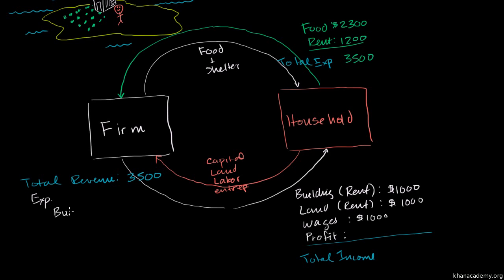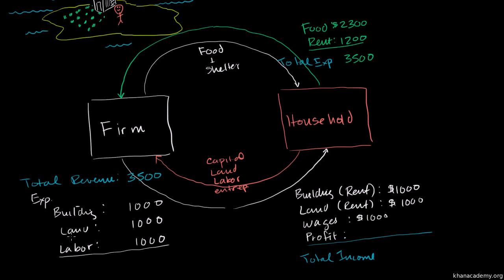So for expenses: the firm has to pay $1,000 for the building, $1,000 for the land, and $1,000 for the labor. What's left over is the profit — we're assuming no taxes here. $3,500 minus $3,000 gives us a profit of $500, and that goes to the owner of the firm, who happens to be this guy.